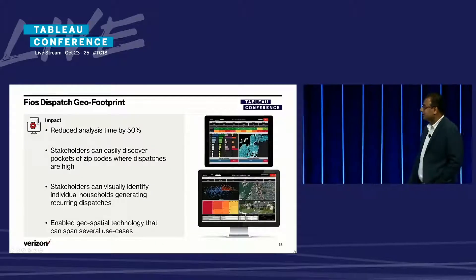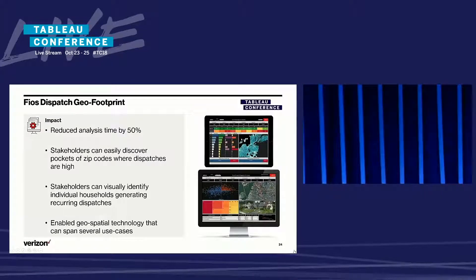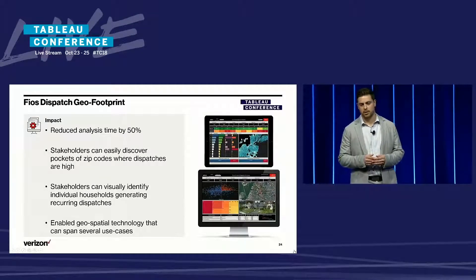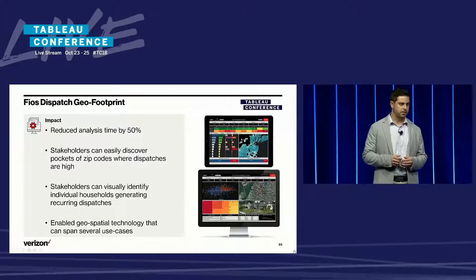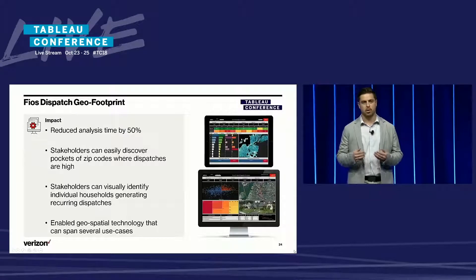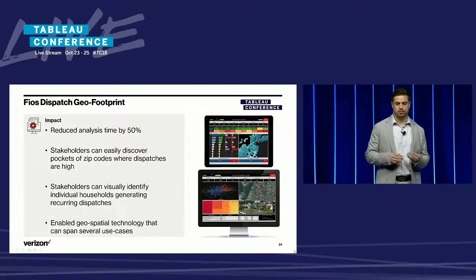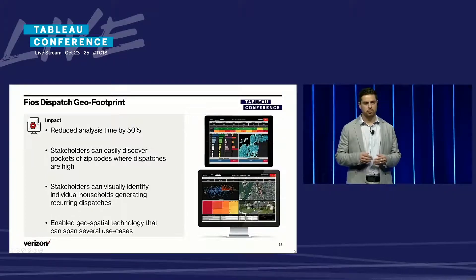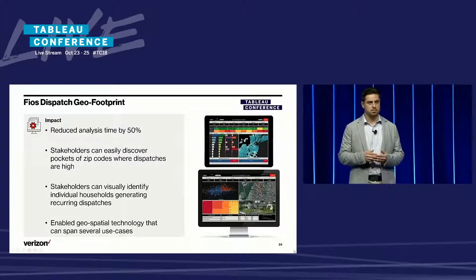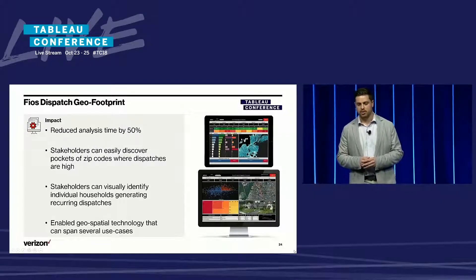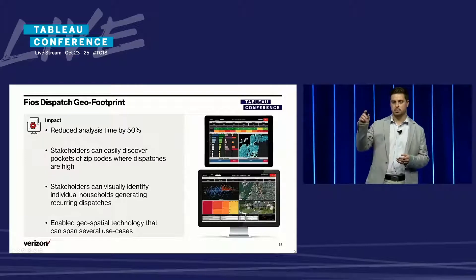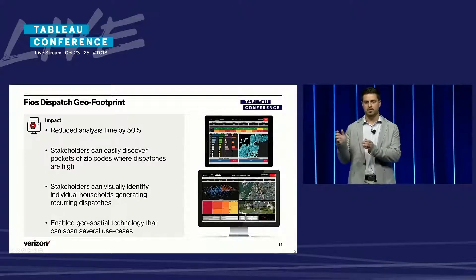This has helped us a lot in the analysis. This is the type of dashboard where we get a lot of questions about these KPIs, so it's going to reduce analysis time by 50%. If you get a bunch of questions in an analytics organization, you know how important it is to automate those insights and let stakeholders slice and dice. It's also enabling geospatial technology so we can now see which zip codes have high dispatches or any poor KPI that we need to measure. Stakeholders can also see where recurring dispatches are happening, and you can put in one, two, three, four — whatever threshold you need — to find those households that are the outliers.